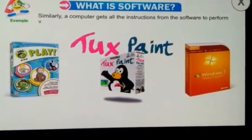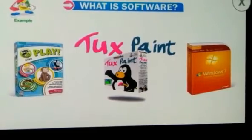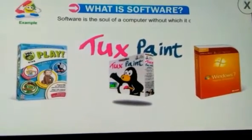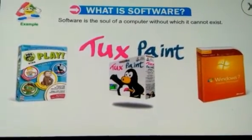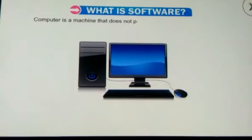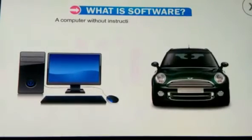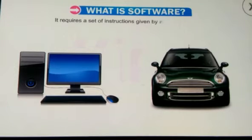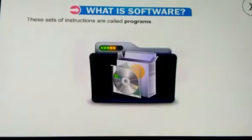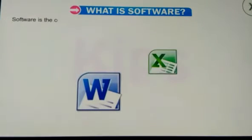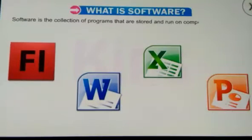Similarly, a computer gets all the instructions from the software to perform various tasks. Software is the soul of a computer without which it cannot exist. A computer is a machine that does not possess any intelligence of its own. A computer without instructions is like a car without a driver. It requires a set of instructions given by a user to work on. These sets of instructions are called programs, which are written in computer languages. Software is the collection of programs that are stored and run on computer hardware and help the users to work on the computer.